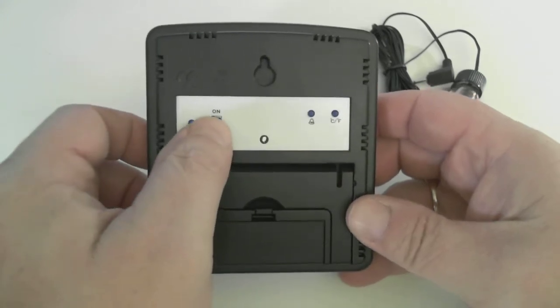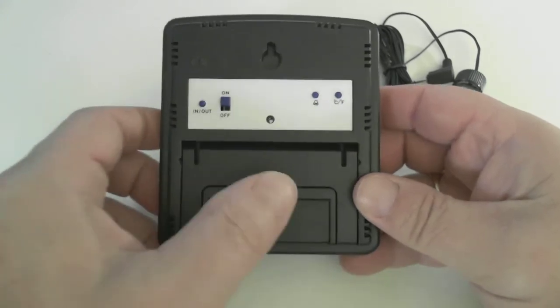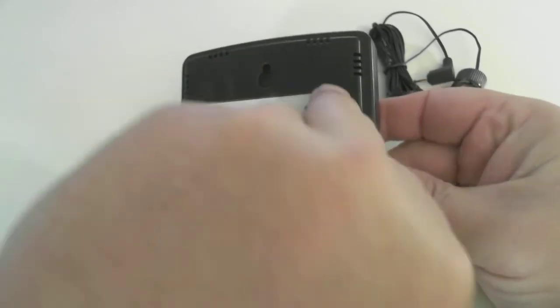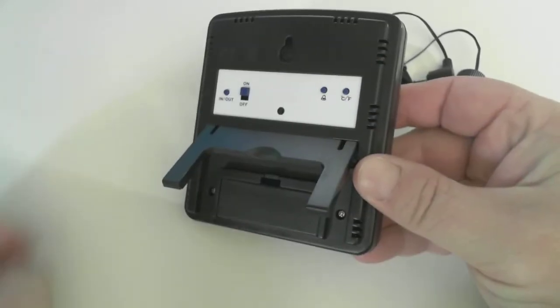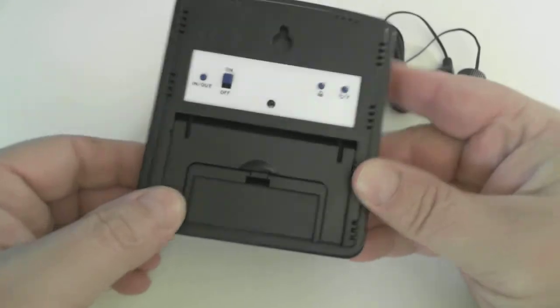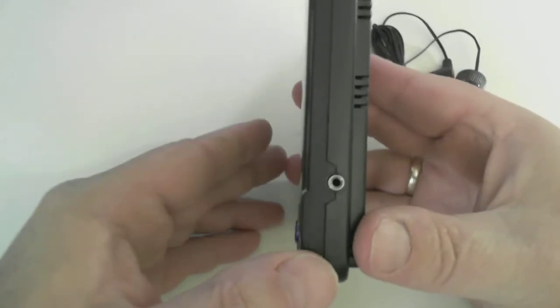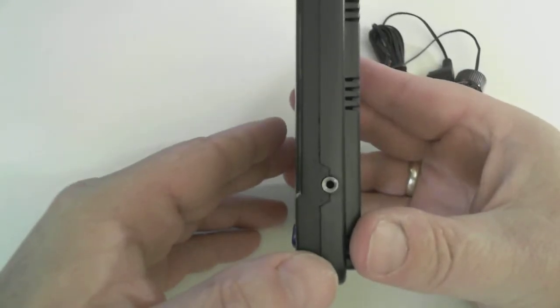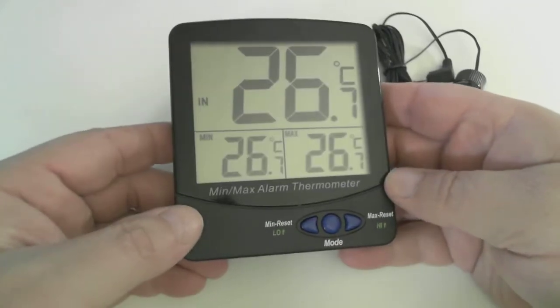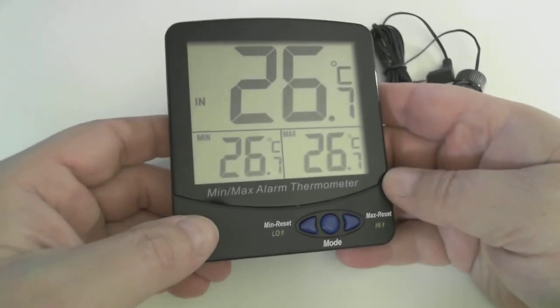Let's turn the unit on. This is your battery compartment. You also have a kick-out table stand. On the side, we have a jack for the external probe. And this is our main display screen.